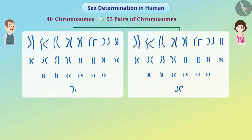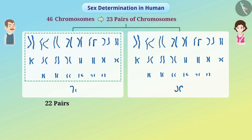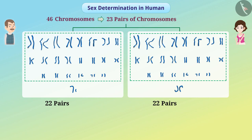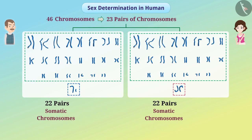Out of these, 22 pairs of chromosomes — that is, 44 chromosomes — are the same in males and females. They have no role in determining the sex of the zygote. These are called somatic chromosomes. But one pair out of the 23 pairs differs in males and females. In females, both chromosomes of this pair are of normal size, which we denote by XX.